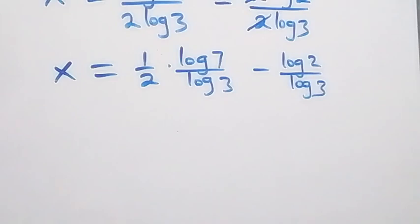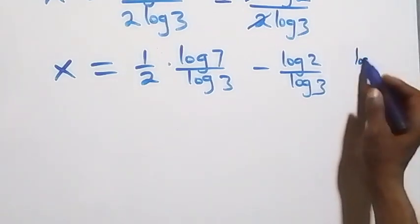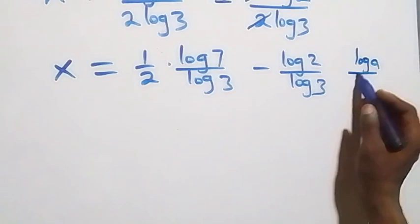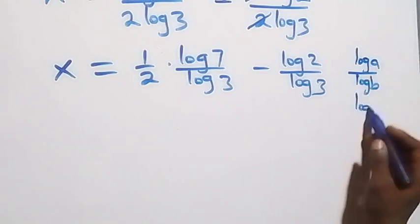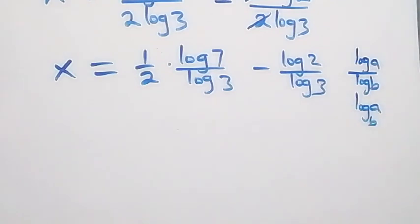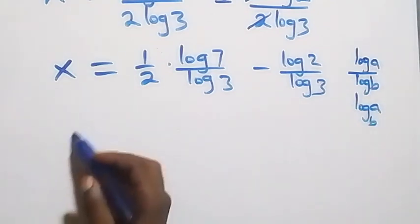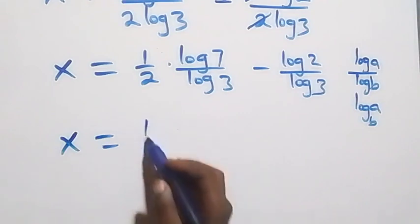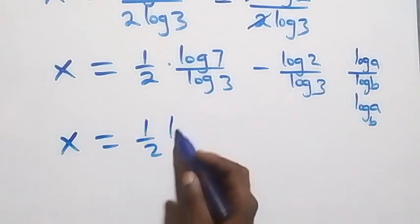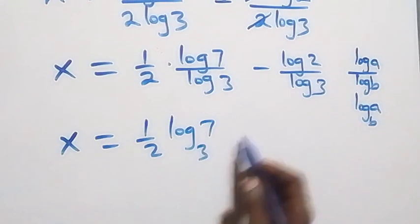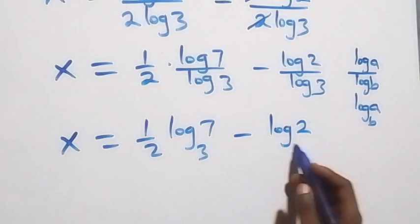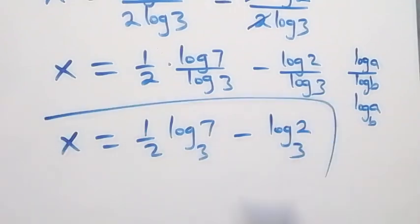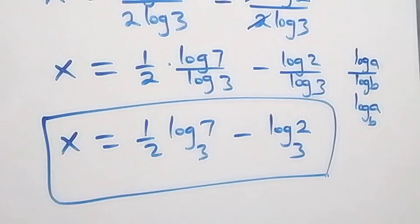Next step, we apply change of base. We have x equals log 7 to base 3, then minus log 2 to base 3. So the value of x is one half log 7 base 3 minus log 2 base 3.